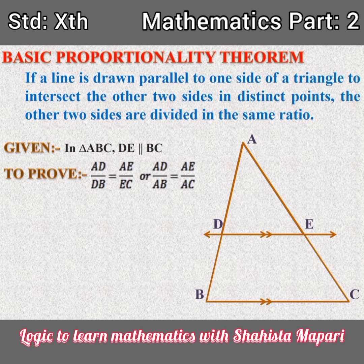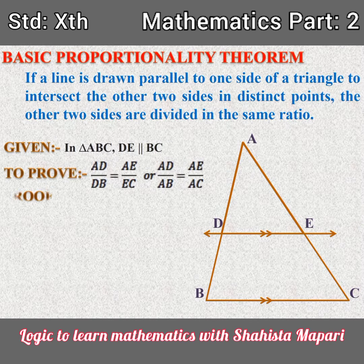Let's prove that AD upon DB is equal to AE upon EC, or we can say that AD upon AB is equal to AE upon AC. Now let's solve the proof.